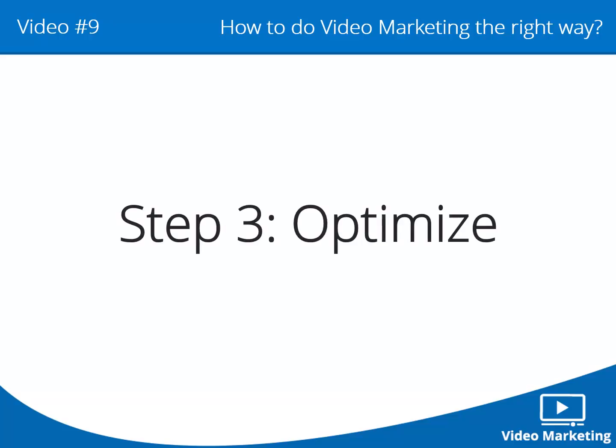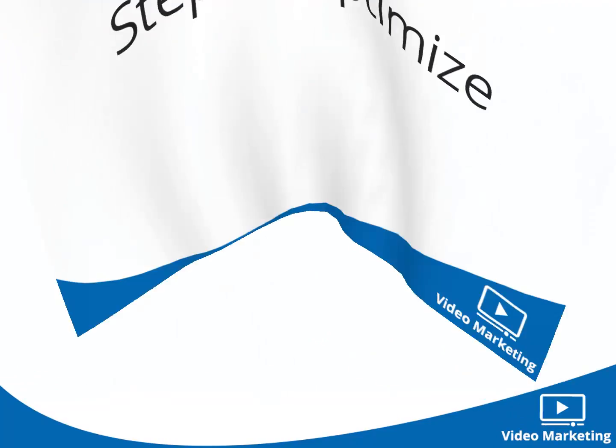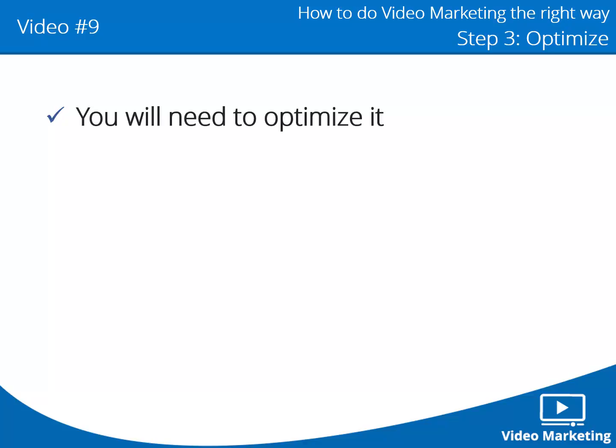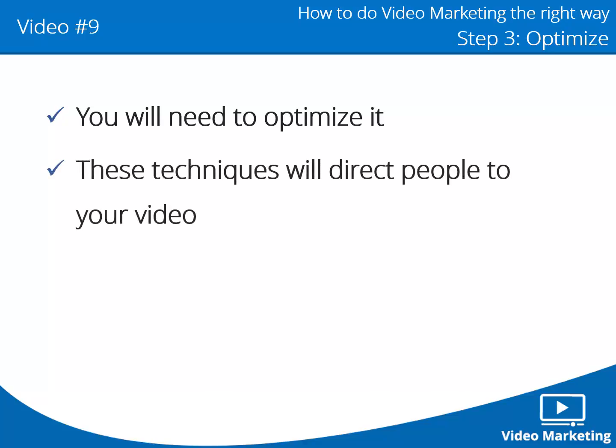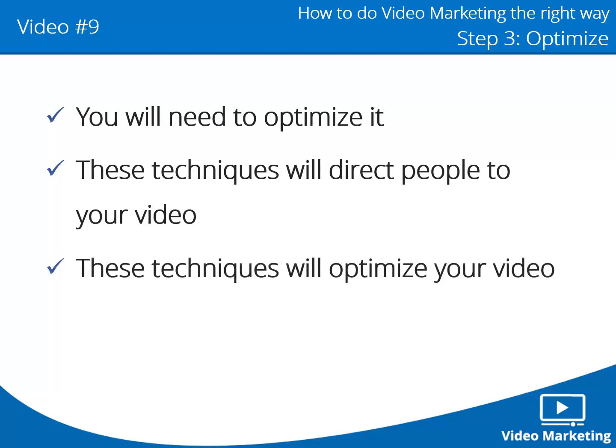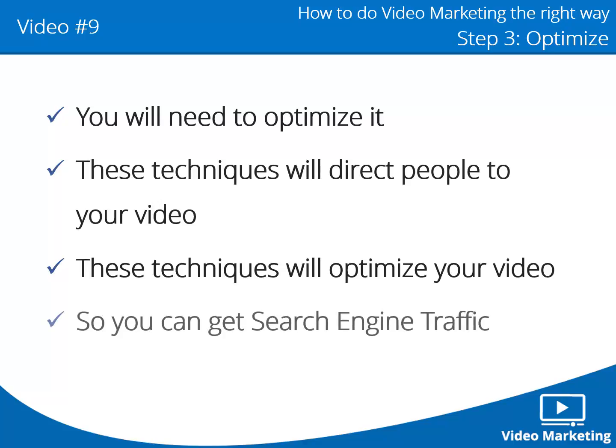This is video number nine, step three: optimize. You might think your video will start getting a million views because your topic is hot, but that's not how it works. In order for your brand new video to start getting attention, you will need to optimize it in specific ways. These optimization principles will direct people straight to your video and optimize it with search engine optimization, or SEO, so you can get the real traffic we're looking for — search engine traffic.